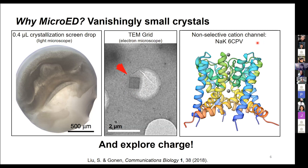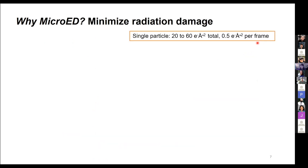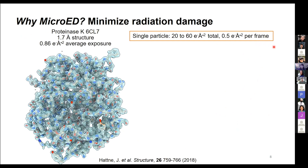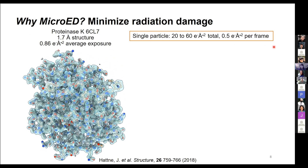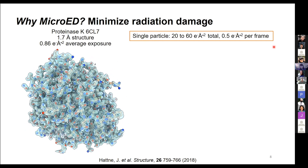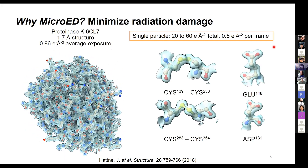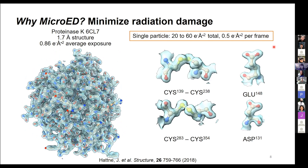With electron microscopy you can explore charge, which is exciting for ion channel biology. Also with microED we can minimize radiation damage compared to some other techniques. In single particle, you might use 20 to 60 electrons per angstrom squared total exposure, perhaps half an electron per frame. Whereas in microED we can solve a structure like proteinase K using an average exposure of less than one electron per angstrom squared. This lets us see things like intact disulfide bonds and acidic side chains.